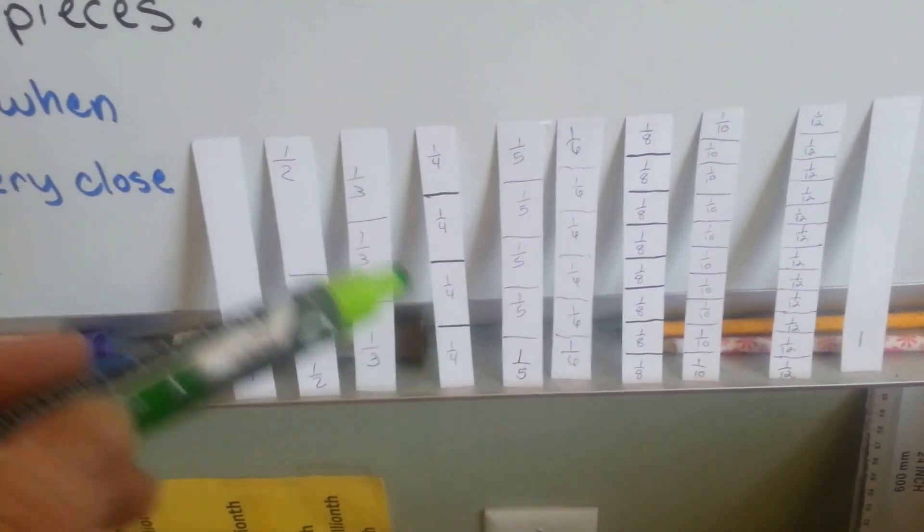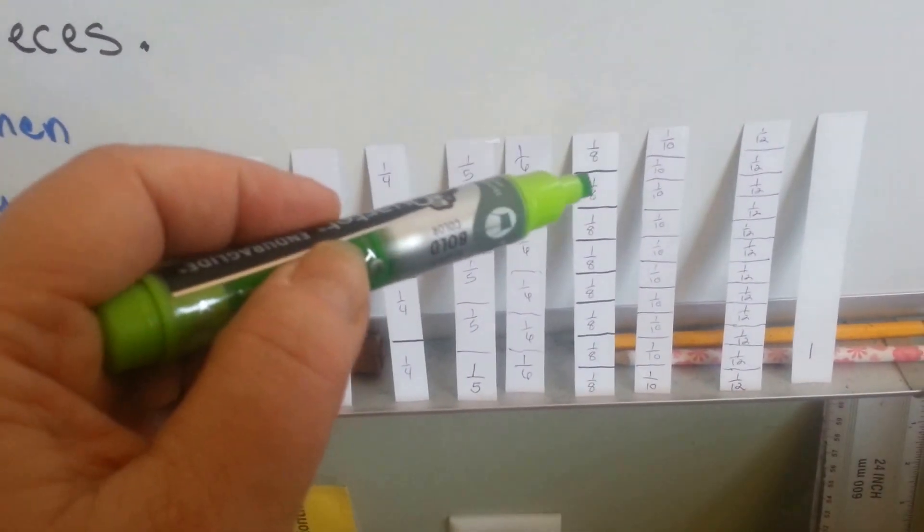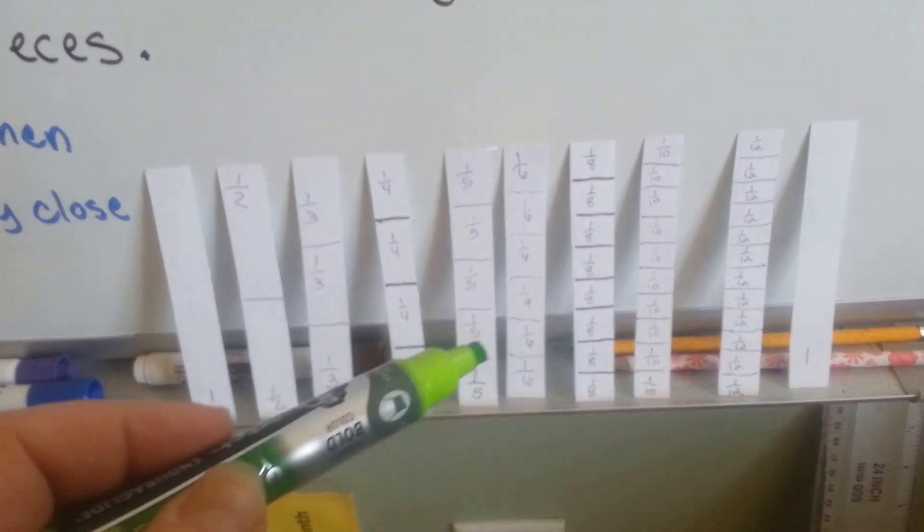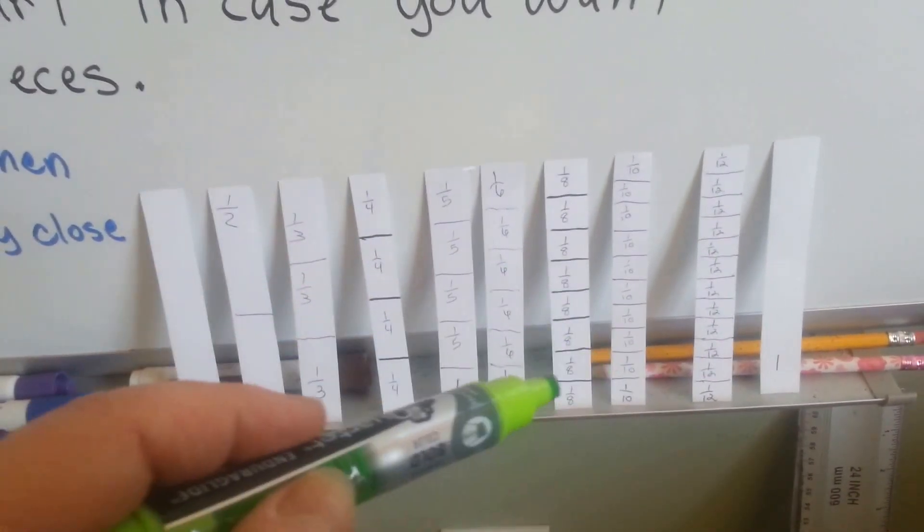If you don't label them, you're not going to know if it was a fourth or a third or a fifth. So, you have to label each separate little piece. Then, if you want, if you measured carefully, you'll be able to cut them on those lines.